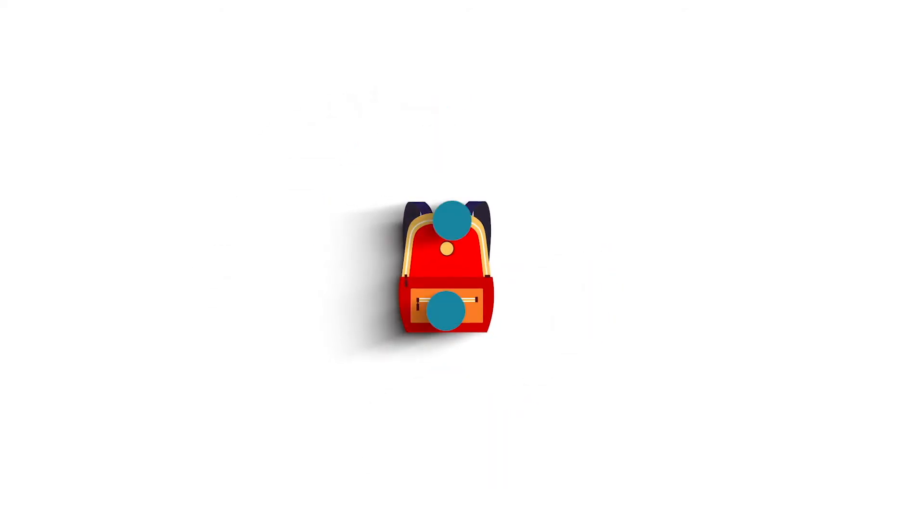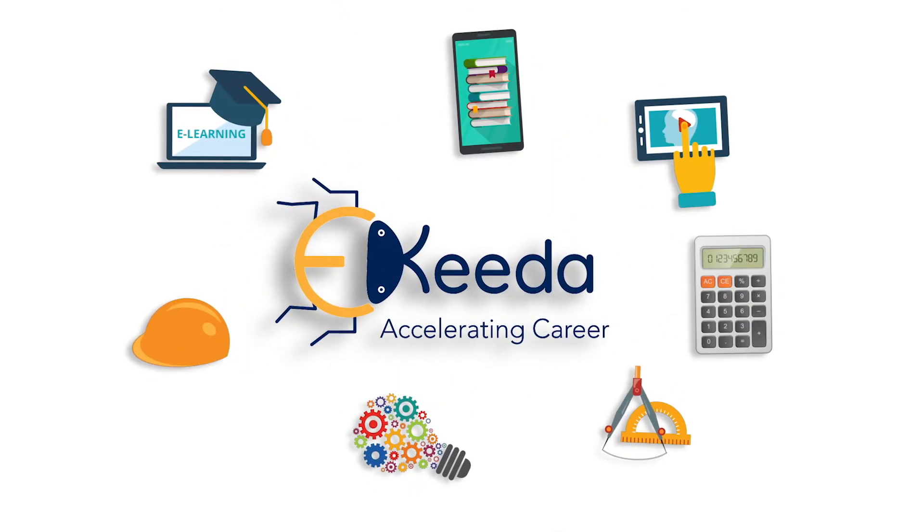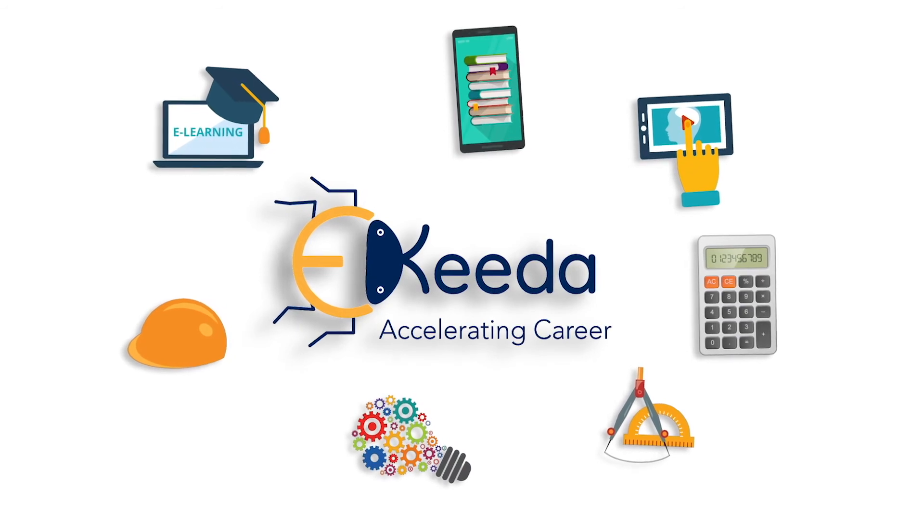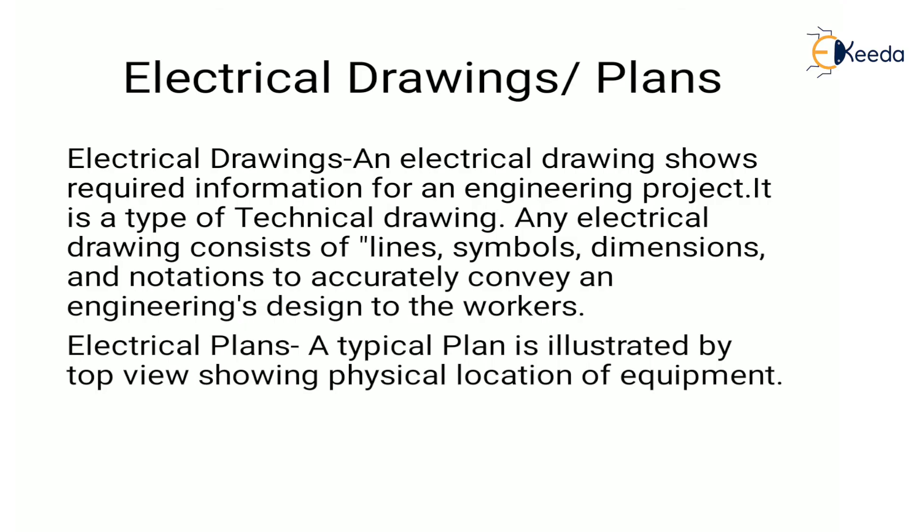An electrical drawing shows required information for any engineering project. It is typically a technical drawing that consists of lines, symbols, dimensions, and notations to accurately convey an engineering design to the workers. An electrical plan is illustrated by the top view showing the physical location of the equipment.